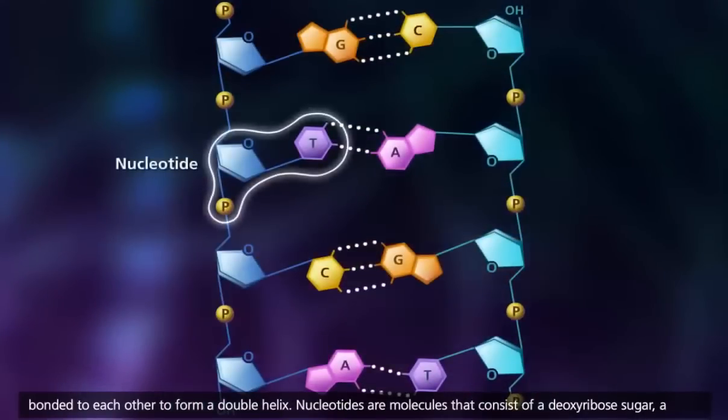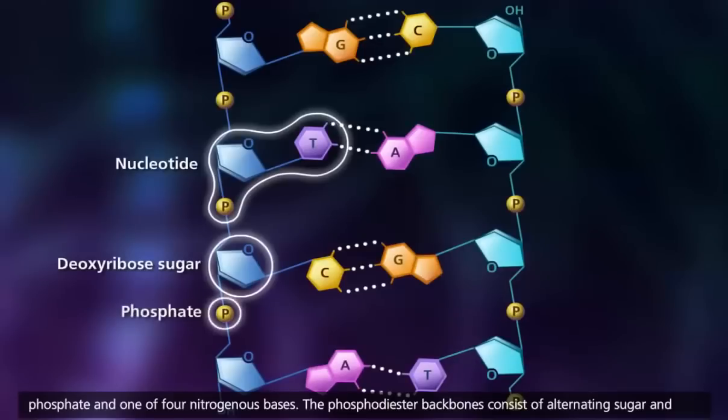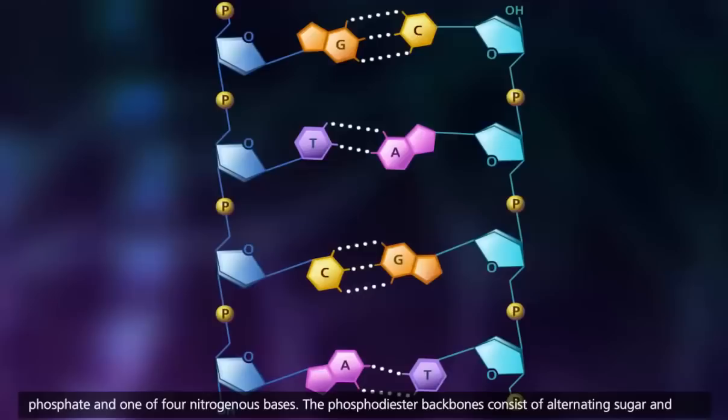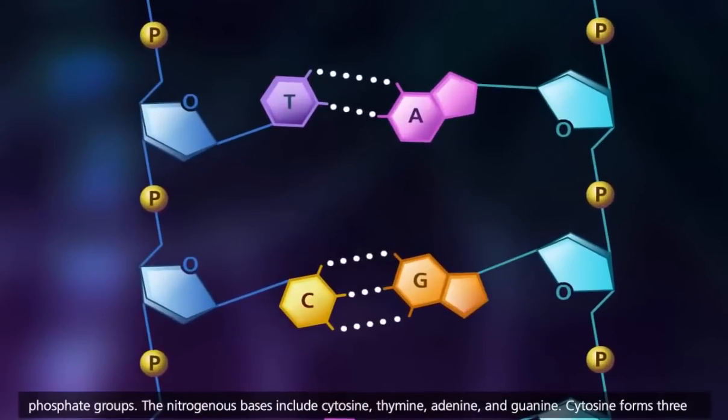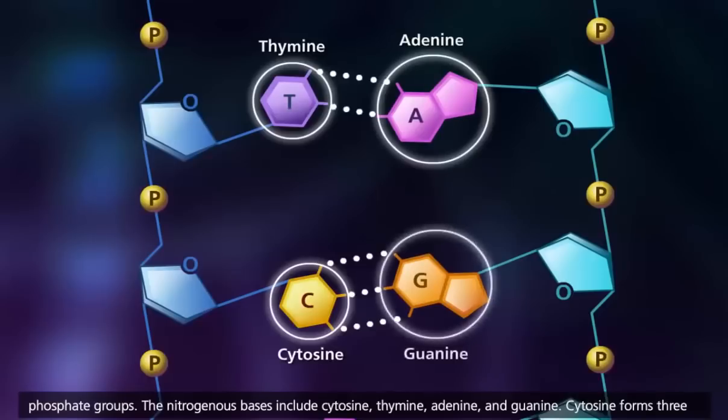Nucleotides are molecules that consist of a deoxyribose sugar, a phosphate, and one of four nitrogenous bases. The phosphodiester backbones consist of alternating sugar and phosphate groups. The nitrogenous bases include cytosine, thymine, adenine, and guanine.